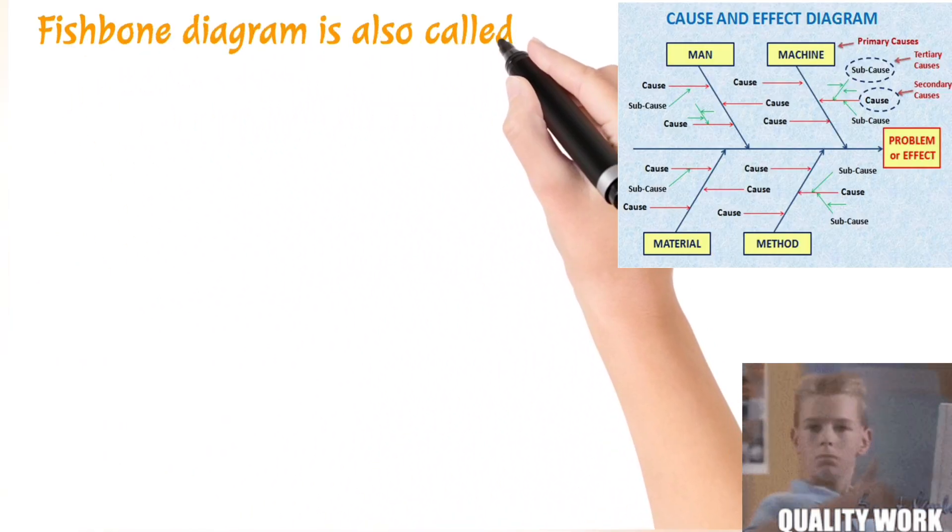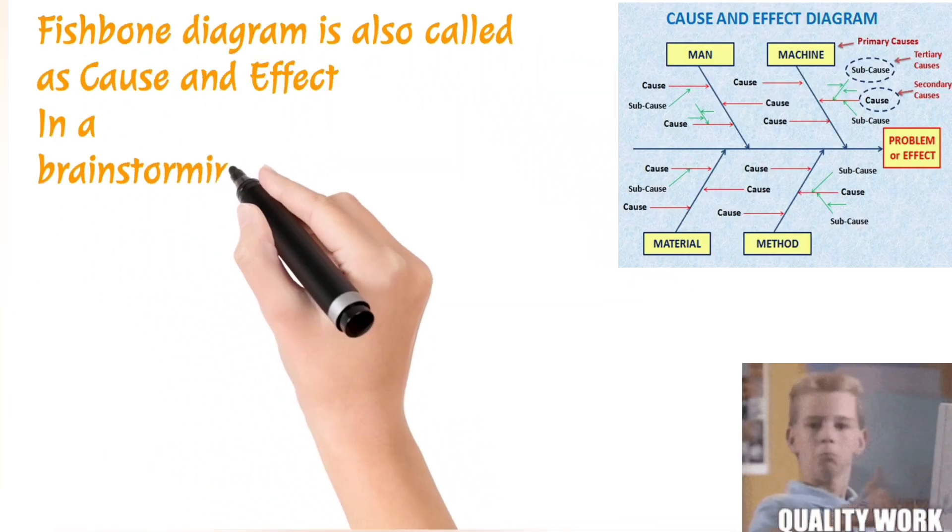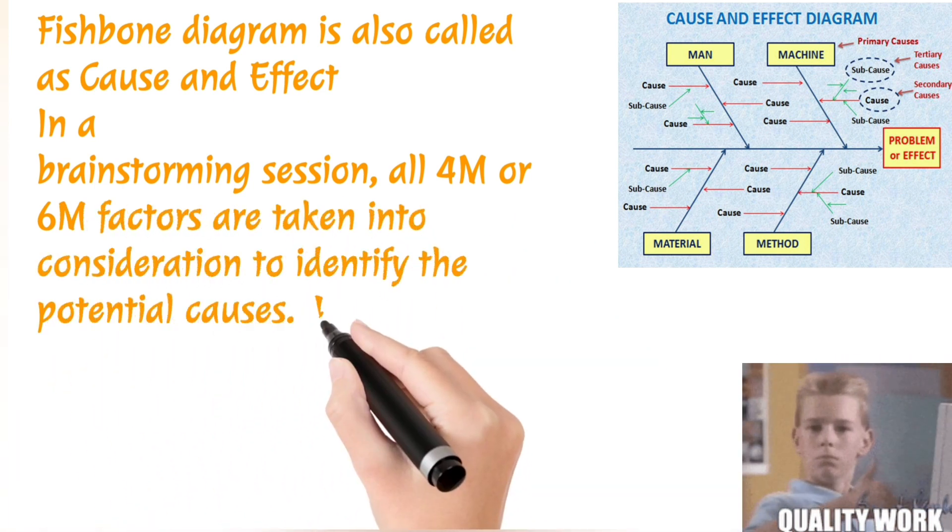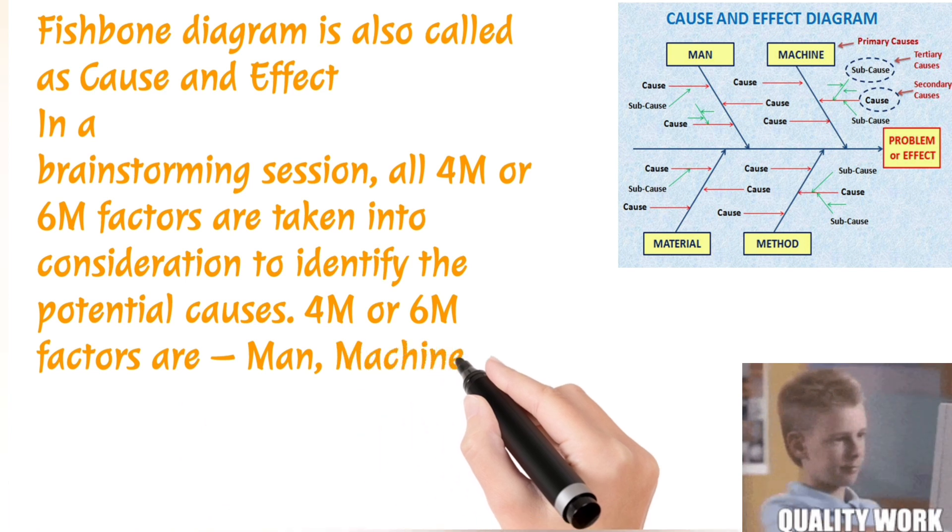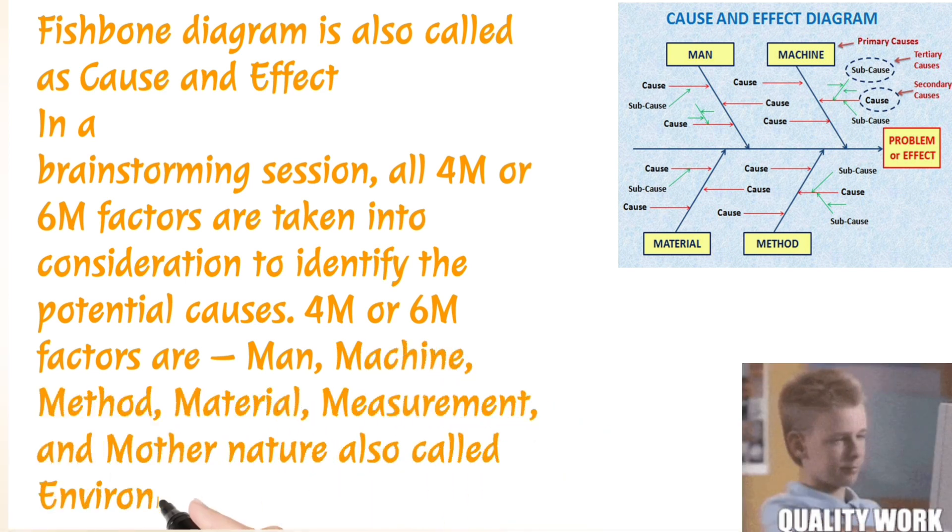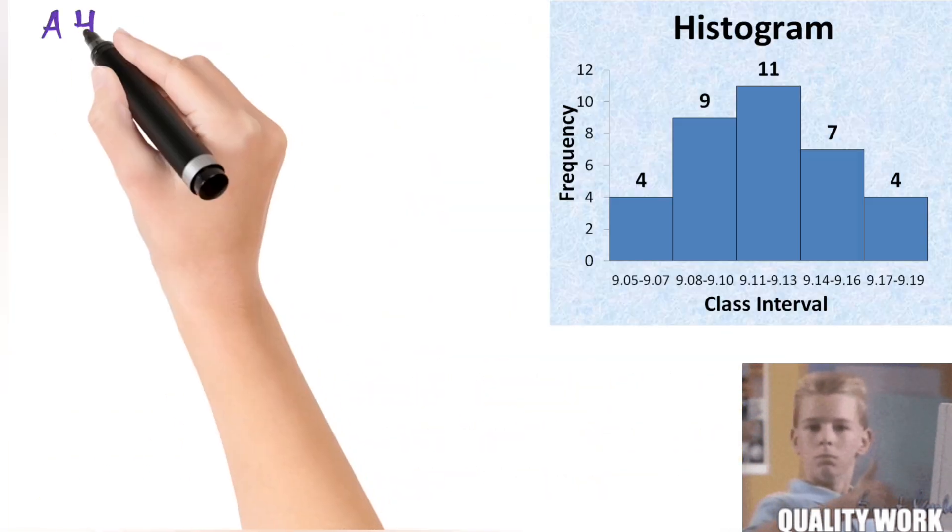Fishbone Diagram is also called cause and effect. In a brainstorming session, all 4M or 6M factors are taken into consideration to identify the potential causes. 4M or 6M factors are man, machine, method, material, measurement, and mother nature also called environment.